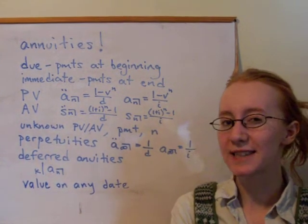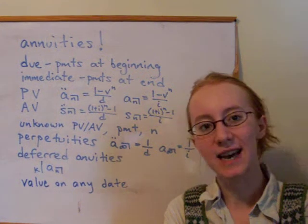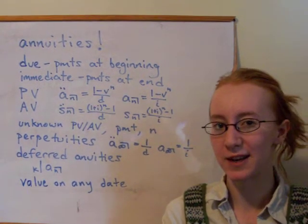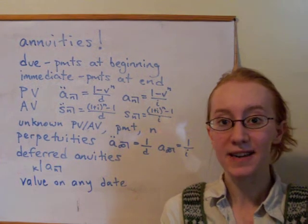Or we could think of it as an immediate annuity starting at time k minus 1, and then take it back to time 0 by multiplying by v to the k minus 1. Yet another way to think about it is,